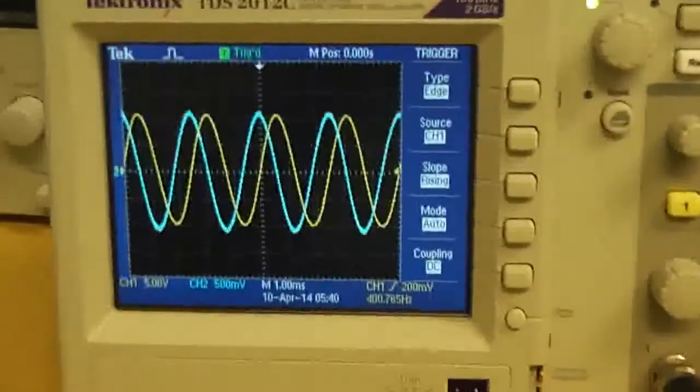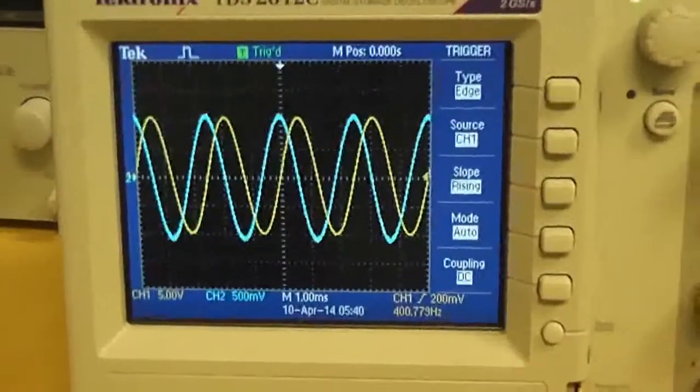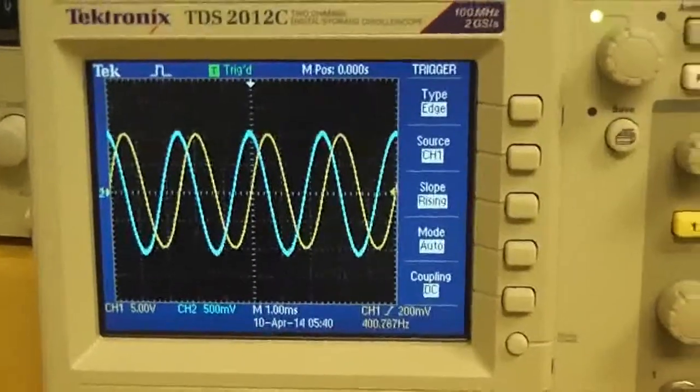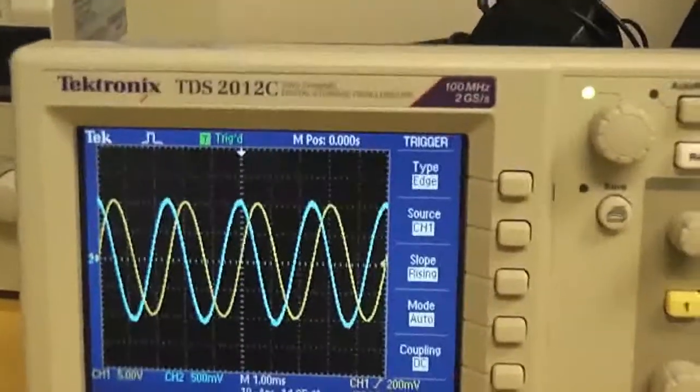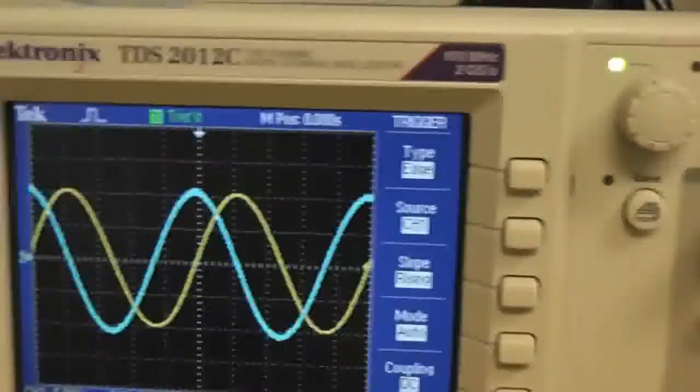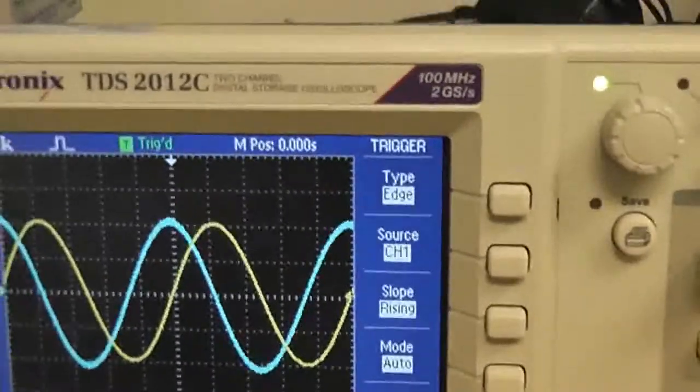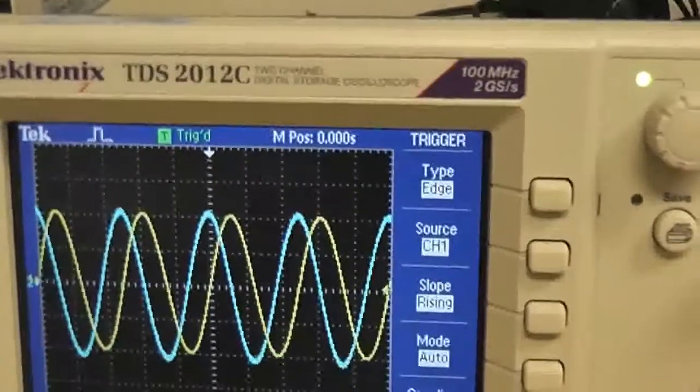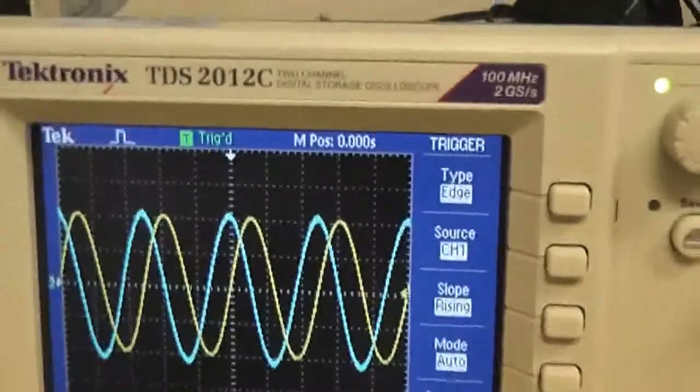On the oscilloscope there's two waveforms, one which is the blue one, which is the input, that's coming from here, 400 hertz. The other one, the yellow one, is lagging by 90 degrees. You can check that and you'll see it's actually 90 degrees. That's the VCO output, so it's showing it's locked.